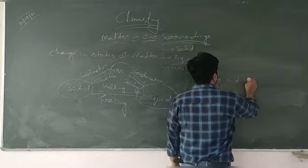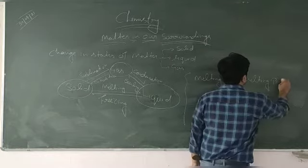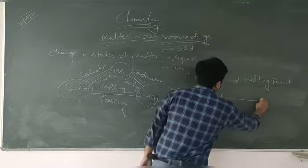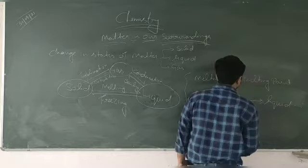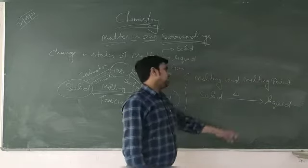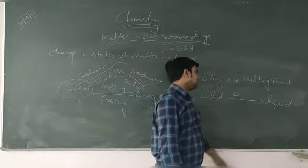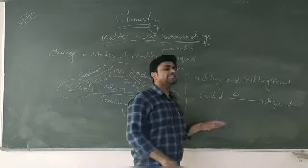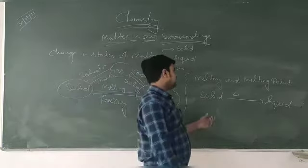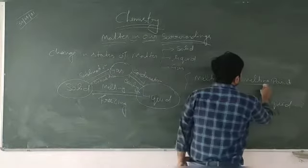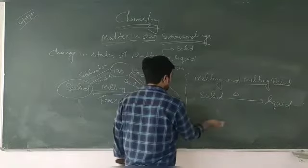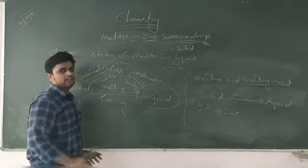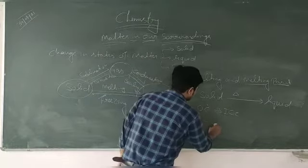Melting and melting point. Melting is when solid converts into liquid on heating — this delta sign is used to express heat. The temperature at which a solid starts melting is called the melting point. The melting point of ice is 0 degrees Celsius, and the melting point of iron is 1538 degrees Celsius.